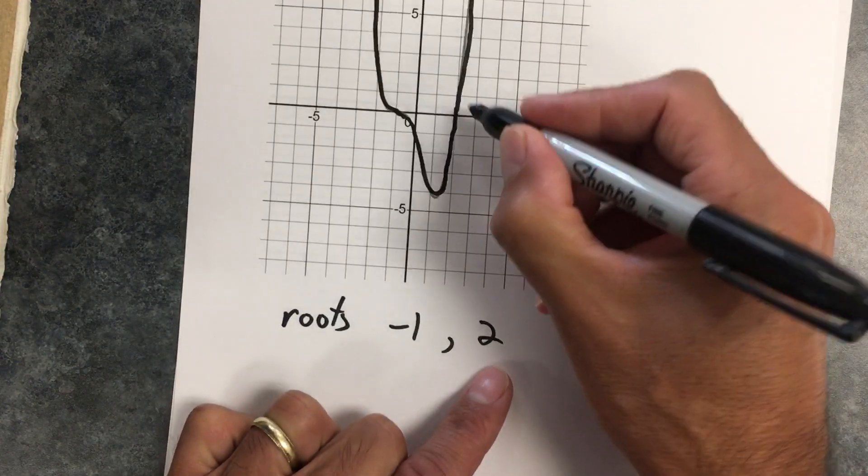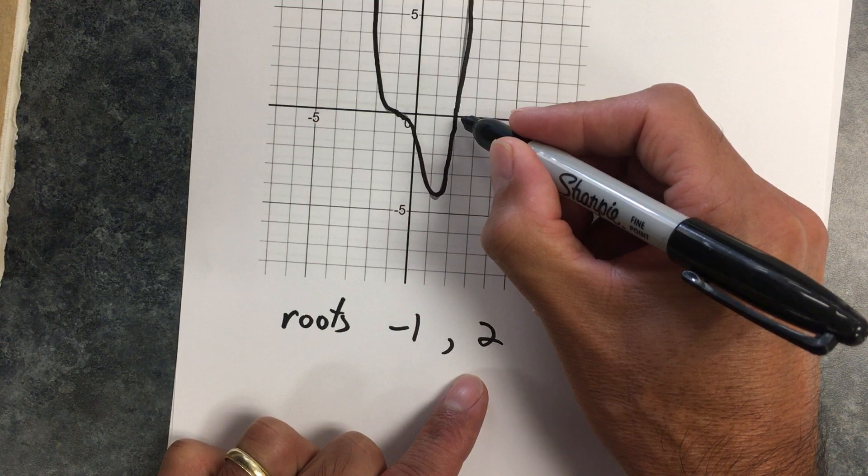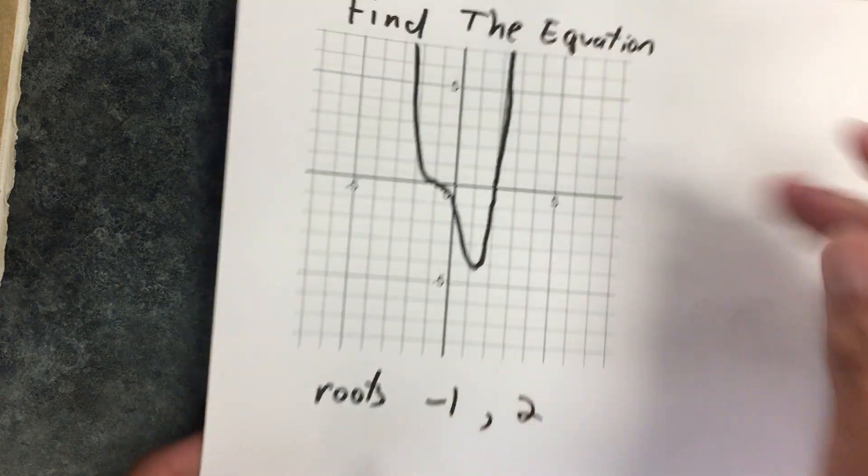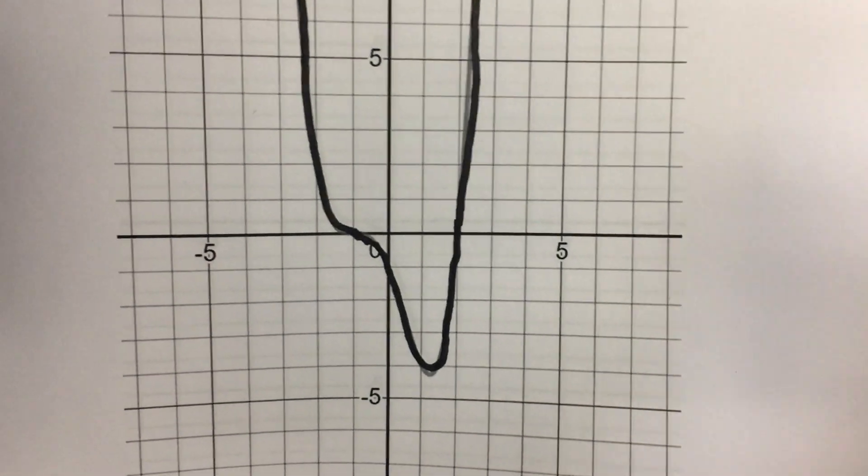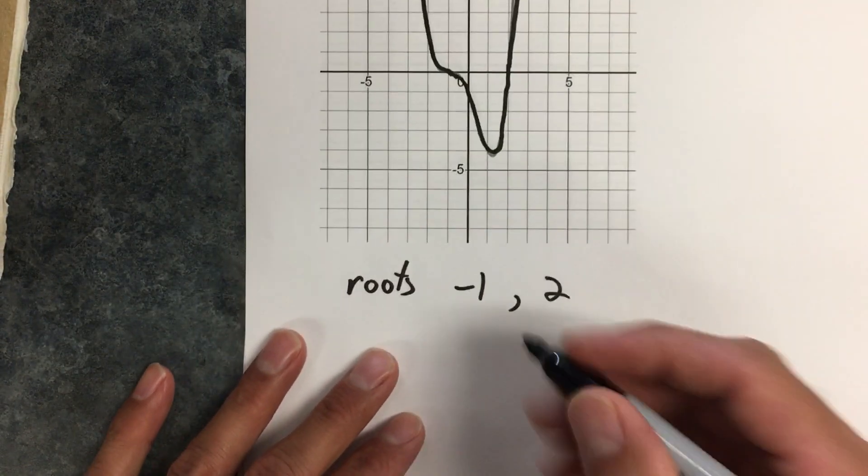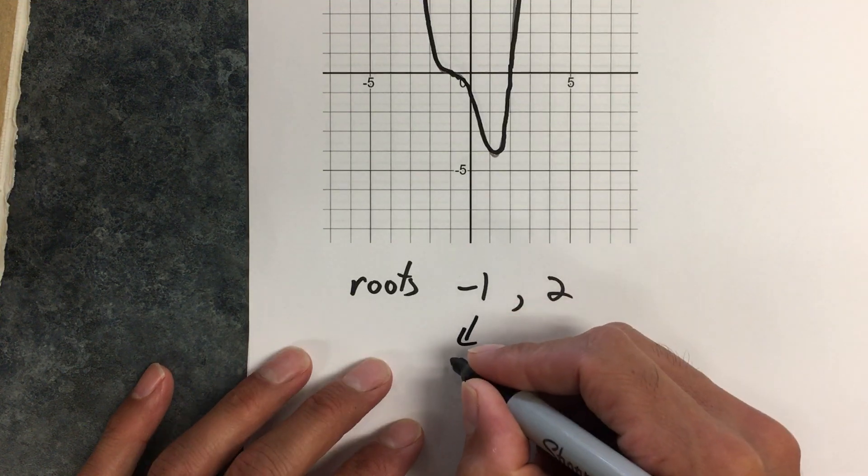So as I look here, over here at positive 2, that's a single root. See how here though—let me zoom in—see how here it curves one way then curves the other? That's a triple root. So over here, this is triple.